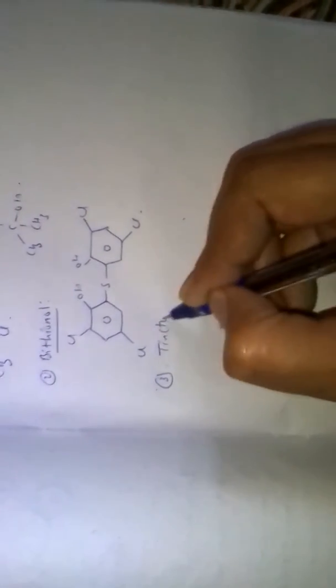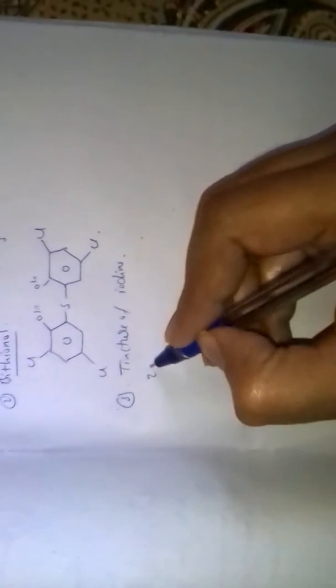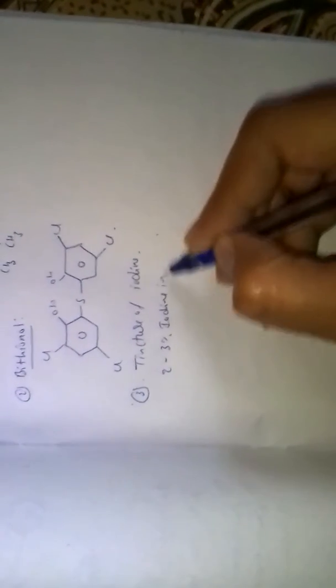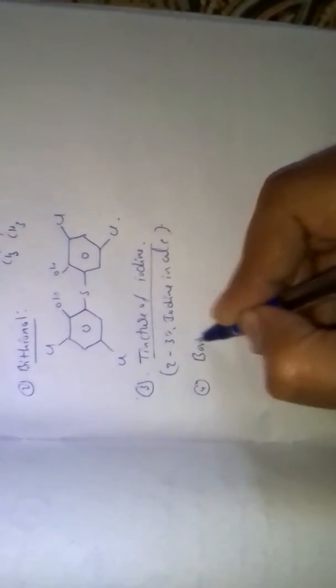Tincture of iodine — 2 to 3 percent iodine in alcohol — is an example of an antiseptic. Boric acid is also an example of an antiseptic, applied on the eyes.